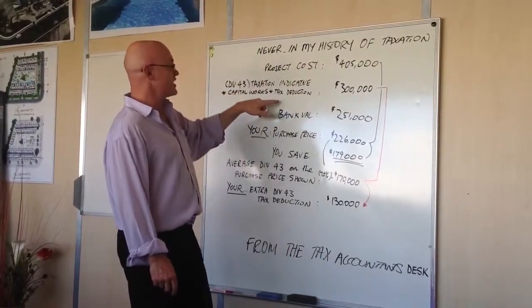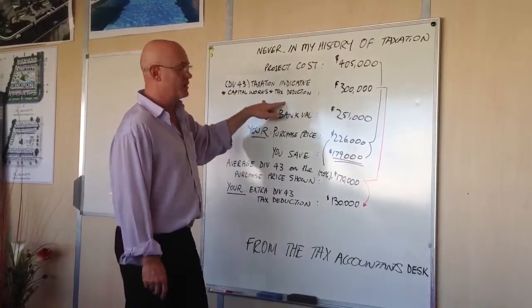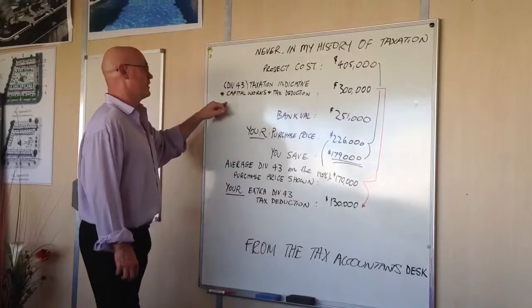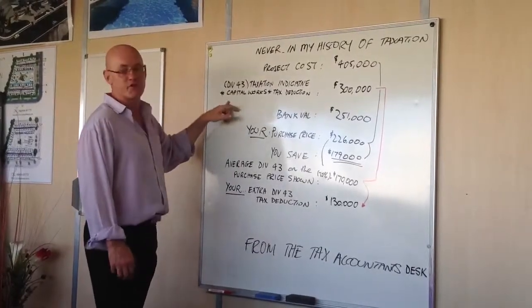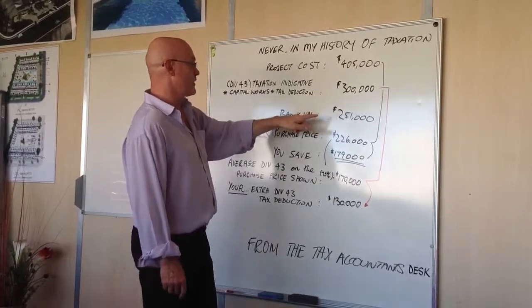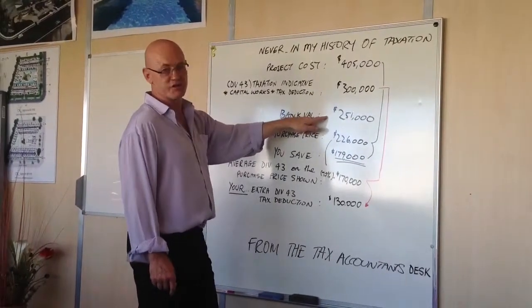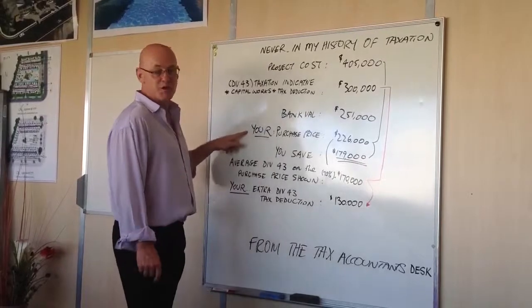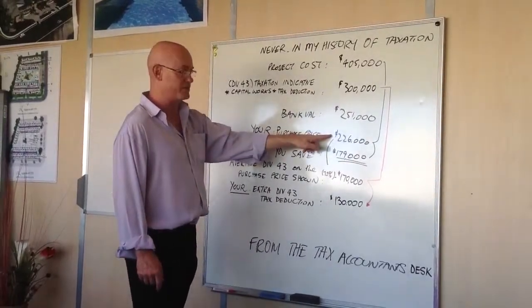The taxation report, which highlights the Division 43 Capital Works tax deduction, is $300,000. The bank valuation is $251,000. Your purchase price is $226,000.